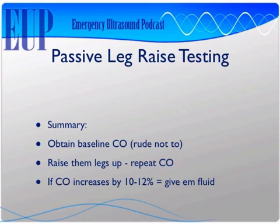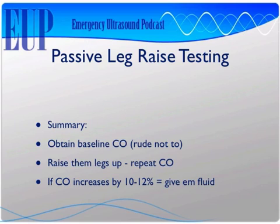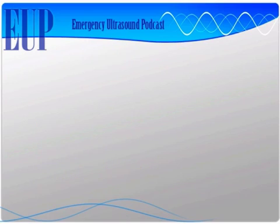In summary: obtain a baseline cardiac output, raise the legs and repeat, and see if the cardiac output increases by 10 to 12%. If it does, give them fluid. The 5% threshold from the paper gives high sensitivity; we're going with 10% because specificity is more important. If the cardiac output increases by 7%? You're going to have to make that decision for yourself.